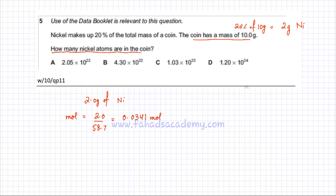Now the next part is I need to find the number of particles. I know that 1 mole is equal to 6.02 into 10 raised to the power of 23 atoms of nickel. So if I have 0.0341 moles, I can use the unitary method and find the number of particles.